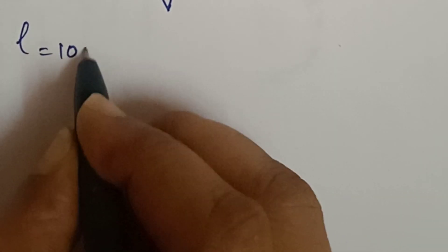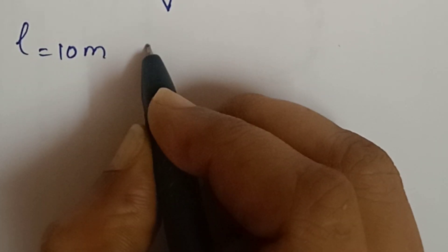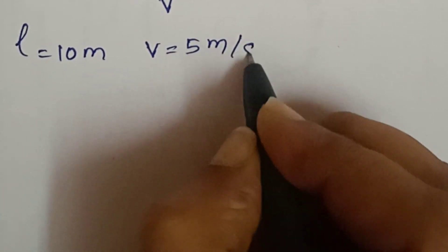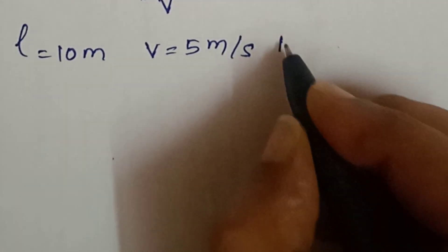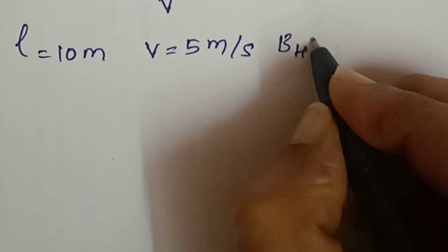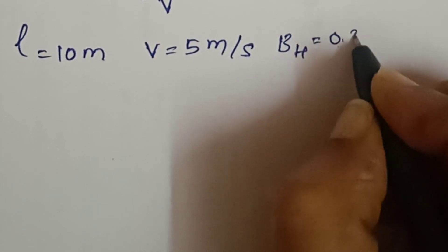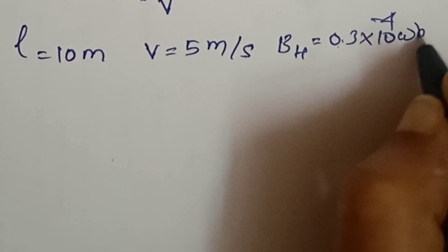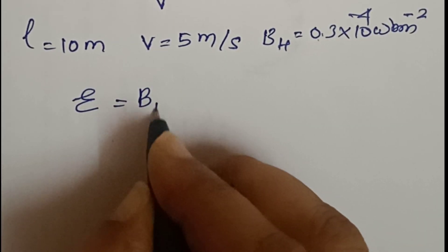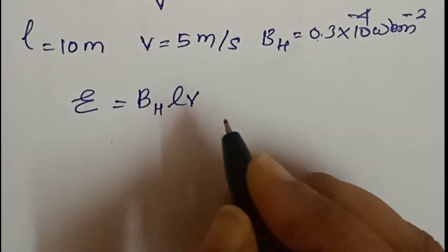L is equal to 10 meter. V is equal to 5 meter per second. Then horizontal magnetic field BH is equal to 0.3 into 10 power minus 4 Weber per meter square. Then the formula is equal to induced EMF is equal to BHLV sin theta.